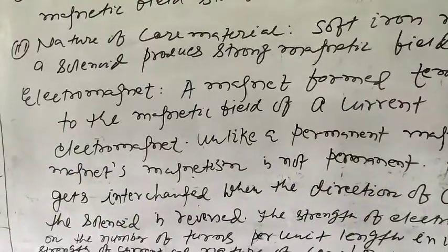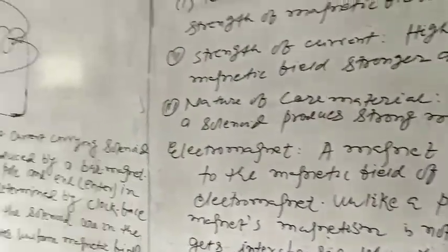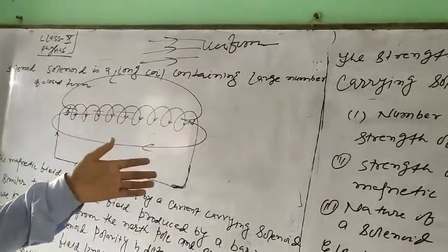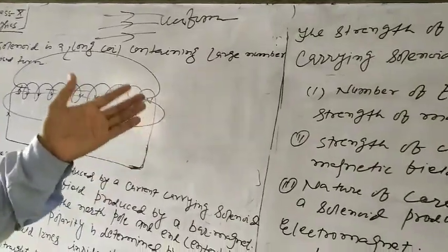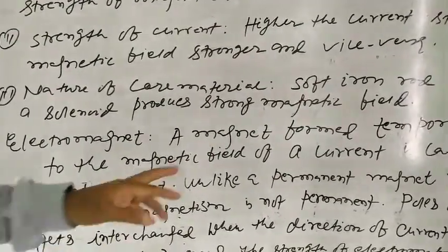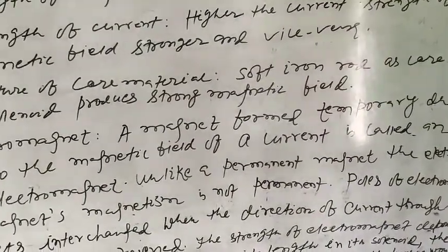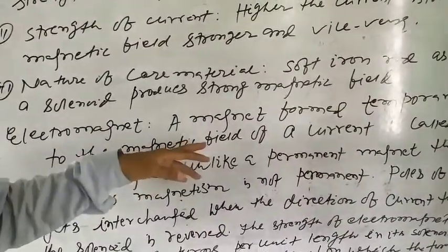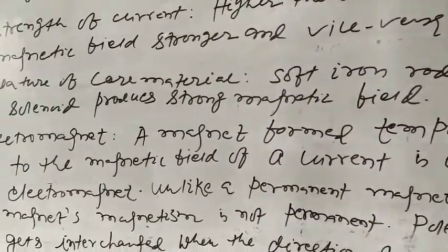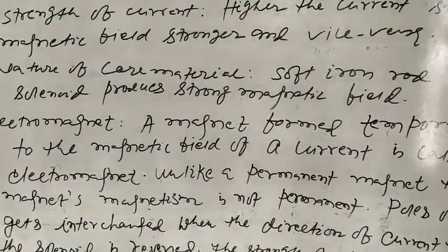Now the second topic is the electromagnet. An application of the magnetic field produced by a current carrying solenoid is that we can make an electromagnet. An electromagnet is a magnet formed temporarily — not permanently — due to the magnetic field of a current. So an electromagnet is not a permanent magnet; it is a temporary magnet.